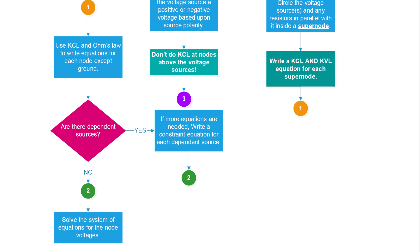Any node that does not have a voltage source, you use KCL and V equals IZ for each of the passive circuit elements to write the equations for each node except ground. Are there dependent sources? If yes, then you're going to have a constraint equation for each dependent source as well. Now that you have all of the equations, you can use your calculator to solve the simultaneous system of equations to find the unknown node voltages.